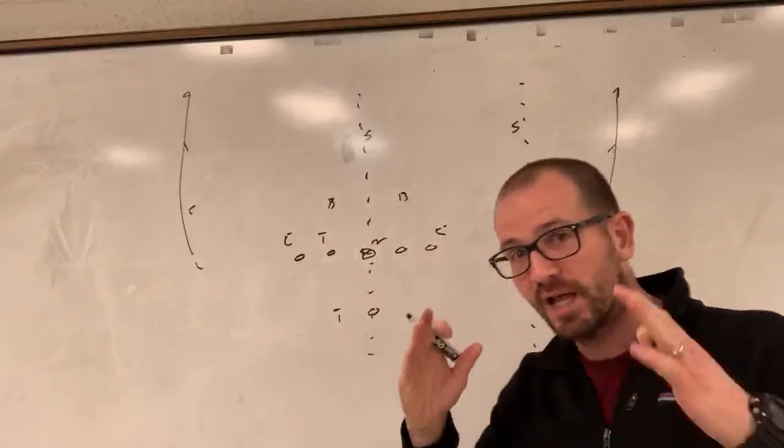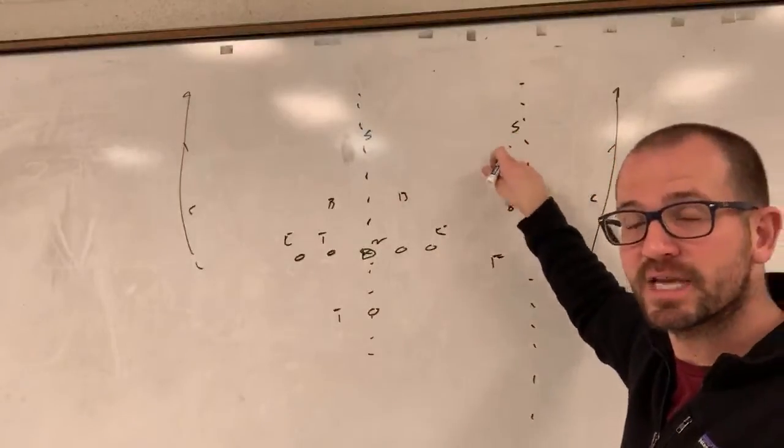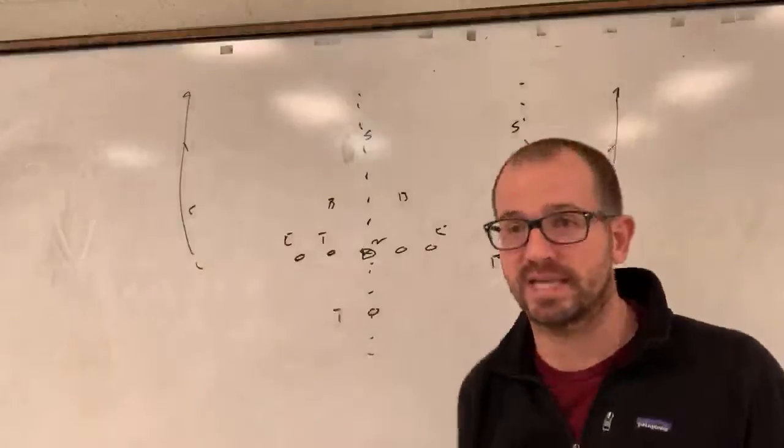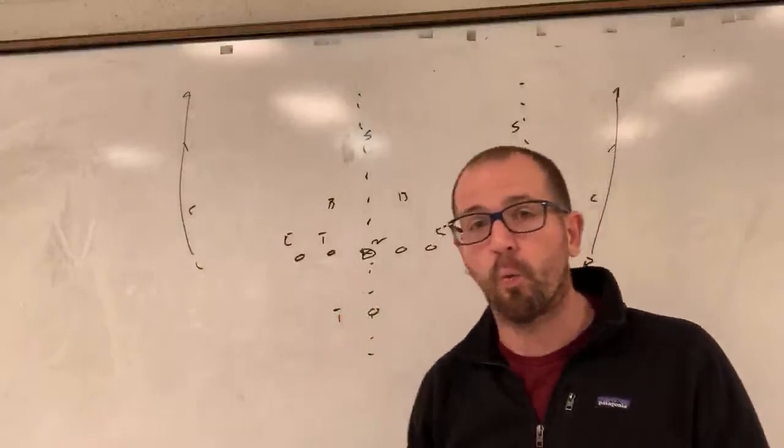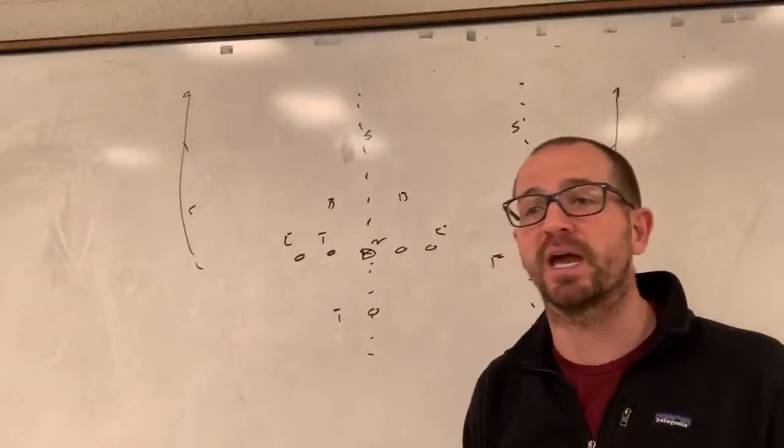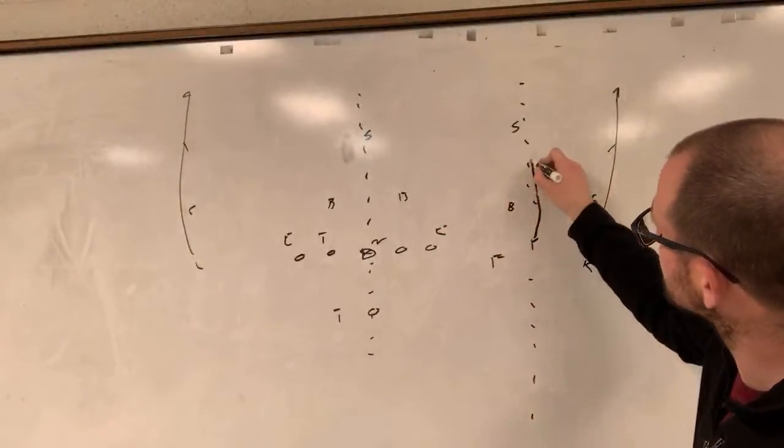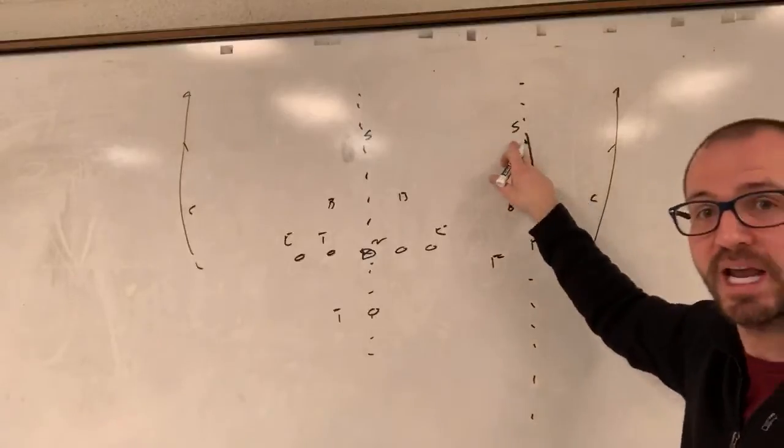He is outside releasing and then he is going to attack the near safety. We want to divide the safety, make him choose one route or the other. And the beautiful thing is whatever he chooses, he's wrong. So he's outside releasing, he's trying to get into the frame, want to step on his toes, and then what he does is he breaks it across his face.